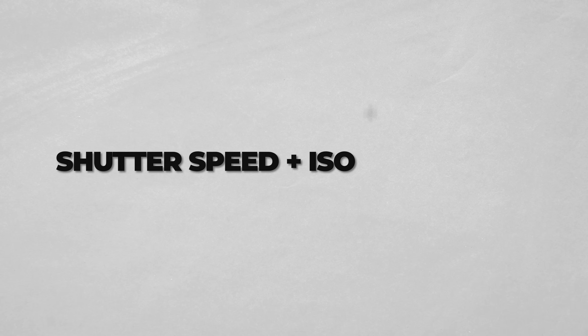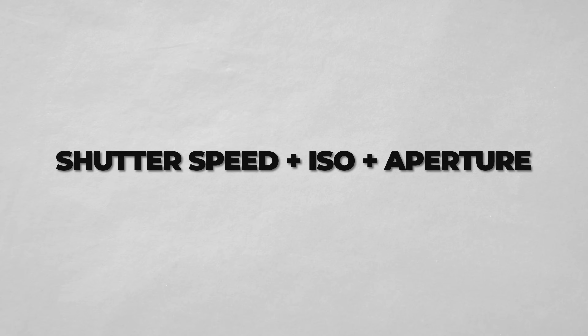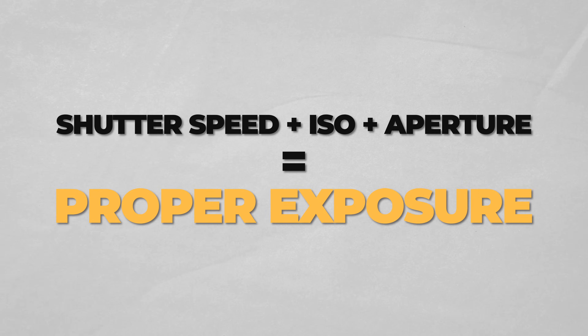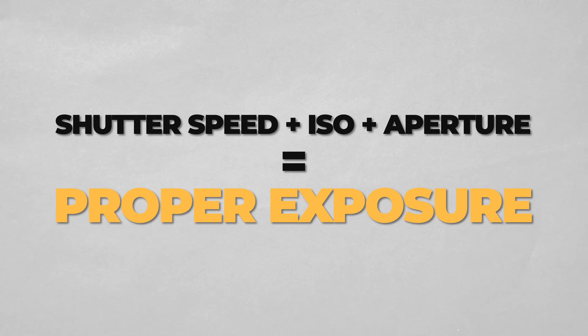Now that we've covered the three settings known as the exposure triangle, why are they called the exposure triangle? They're all connected in the equation that we do to try to get the proper exposure for our shots. If you're trying to get a certain look for your shot, you may have to choose which of these settings is the most important one and then use the other ones to compensate depending on the light.